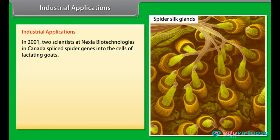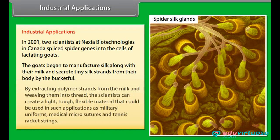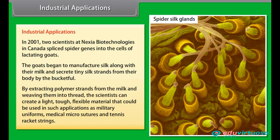Industrial applications. In 2001, two scientists at Nexia Biotechnologies in Canada spliced spider genes into the cells of lactating goats. The goats began to manufacture silk along with their milk and secrete tiny silk strands from their body. By extracting polymer strands from the milk and weaving them into thread, the scientists created a light, tough, flexible material that could be used in applications such as military uniforms, medical micro sutures, and tennis racket strings.